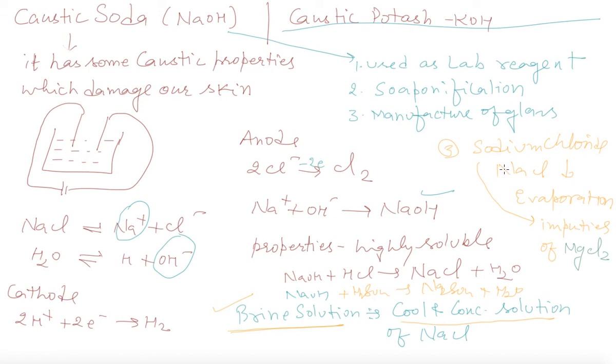Baking soda is used as an antacid and in cakes to make them fluffy. This is all about the first group elements. We will discuss the second group elements in the next class. Till then, goodbye.